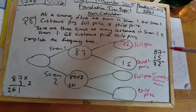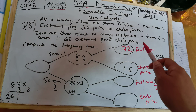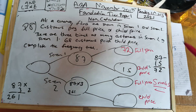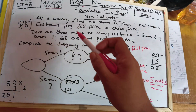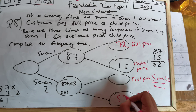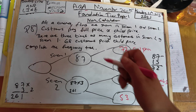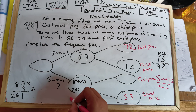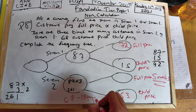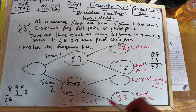The next part: it says 68 customers paid child price, so 15 plus something has to equal 68. So 68 take away 15 gives us 53. Check: 8 take away 5 is 3, and 6 take away 1 is 5 — so that's 53.